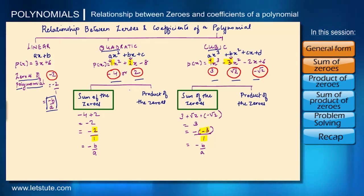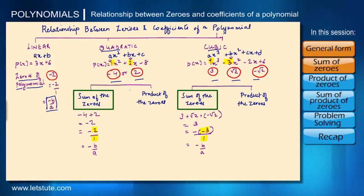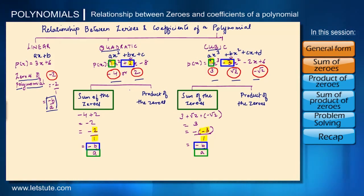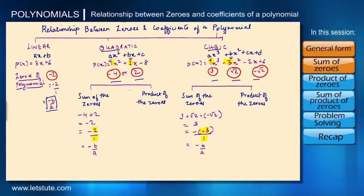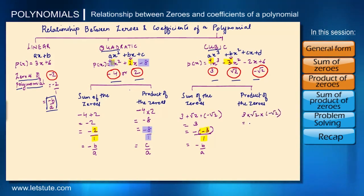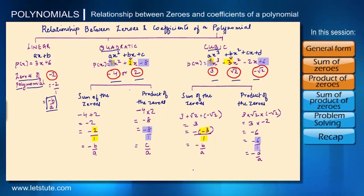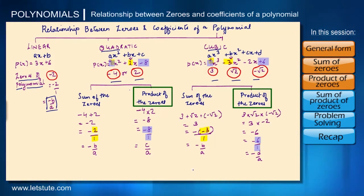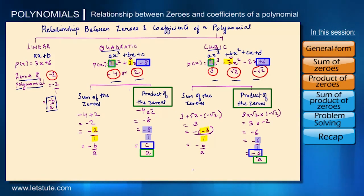So basically, the sum of the zeros in both quadratic and cubic is the ratio of coefficients of the second term to the first term. Now let's find the product of zeros: minus four multiplied by two for the quadratic, and three times root two times minus root two for the cubic. The product of zeros is the ratio of coefficients of the last term to the first term.